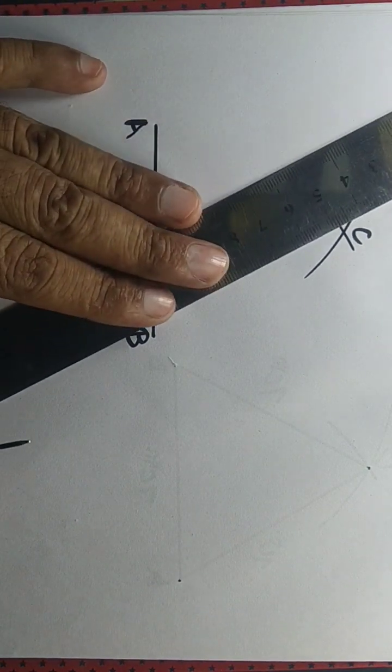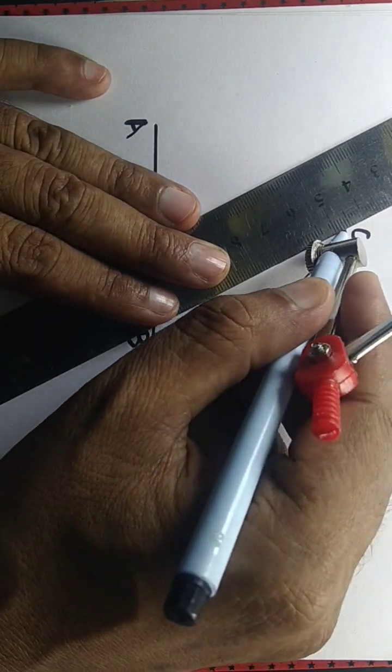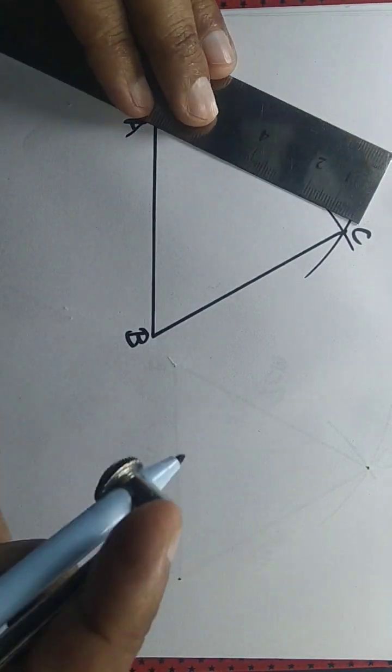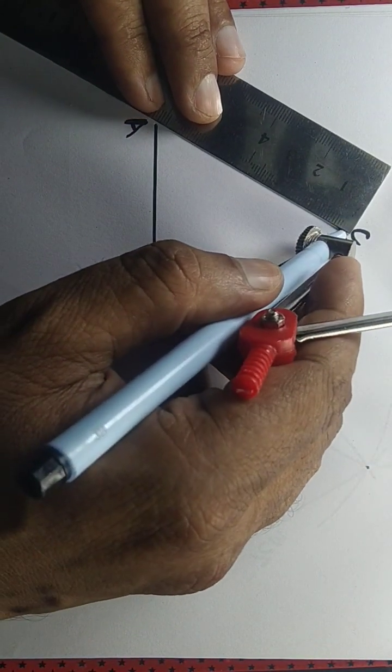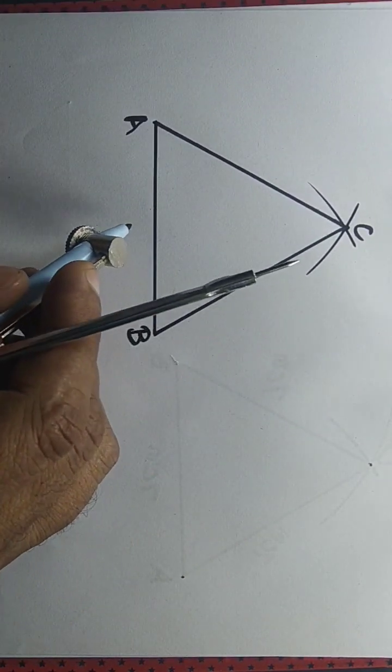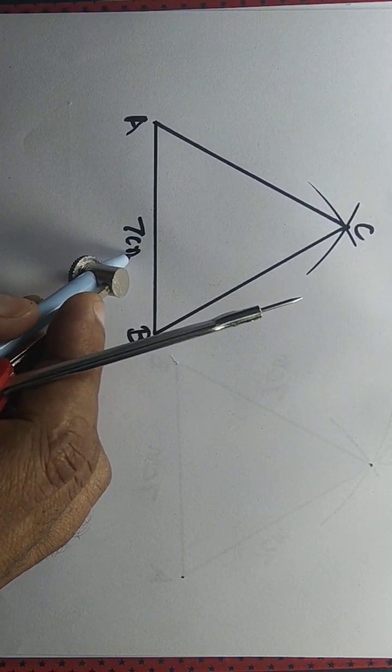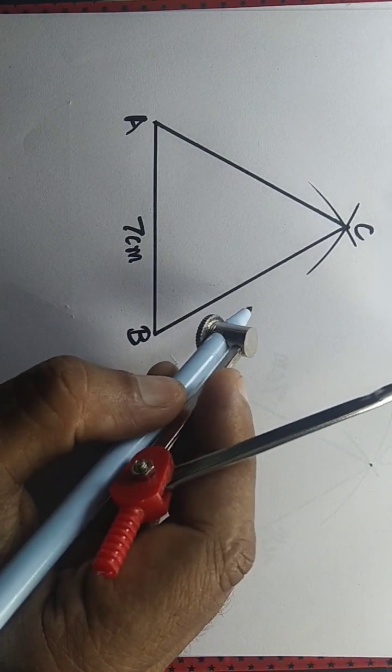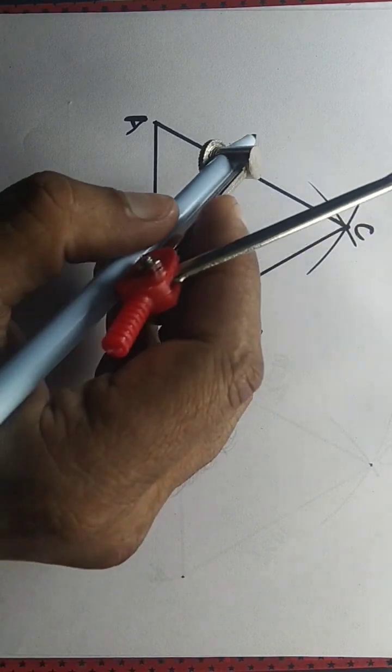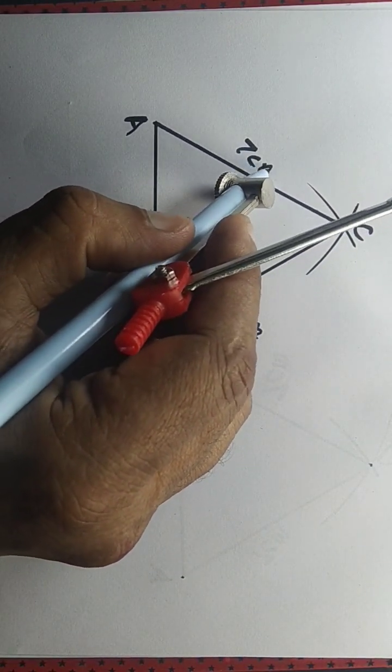Let's join BC and AC. Observe that AB equals 7 centimeters—that's what we chose. BC equals 7 centimeters because the radius of the arc equals 7 centimeters, and AC equals 7 centimeters because the radius of the other arc equals 7 centimeters.